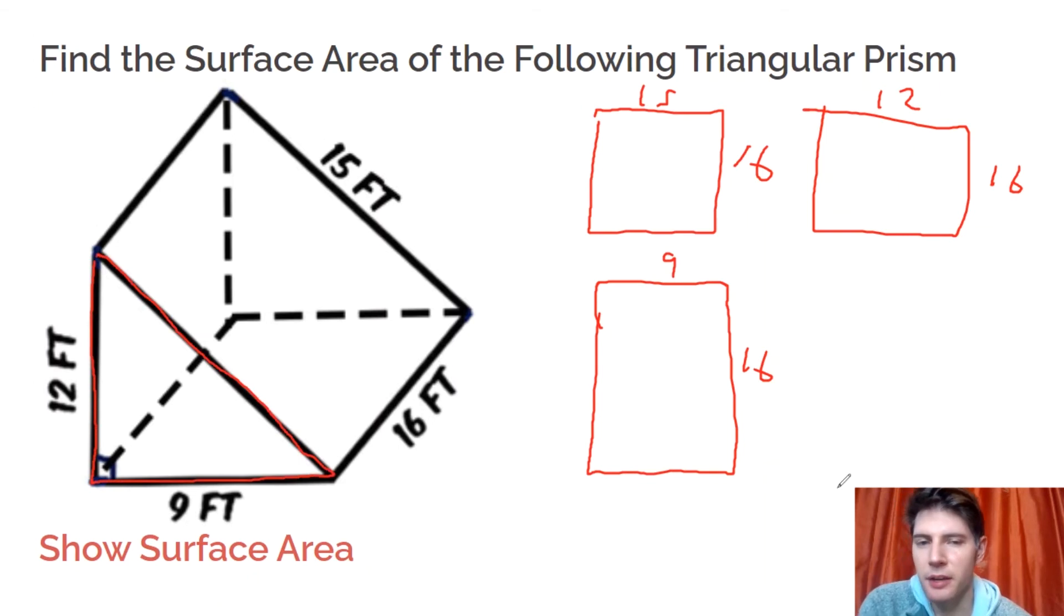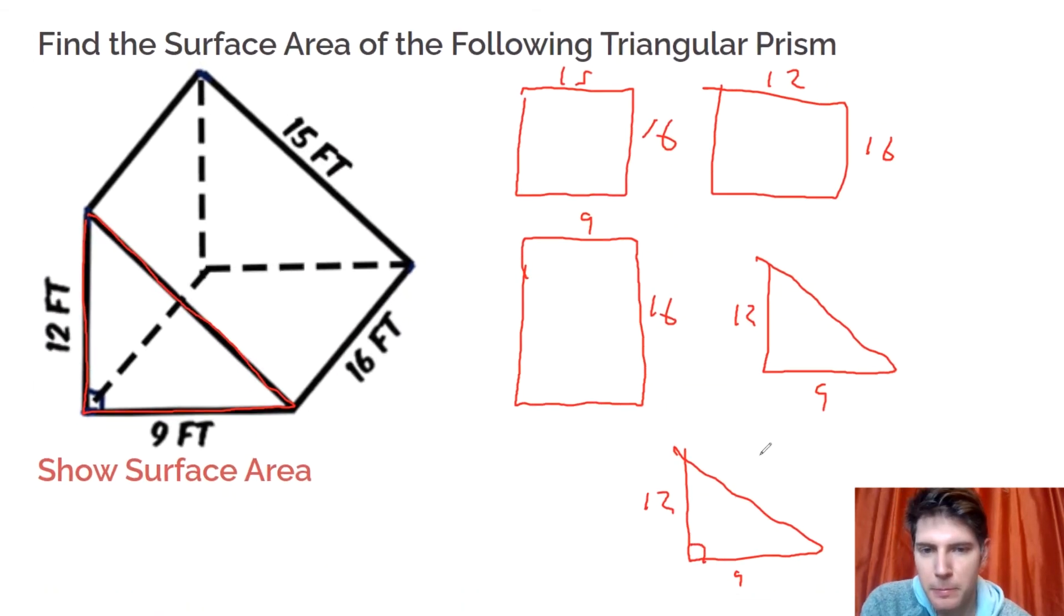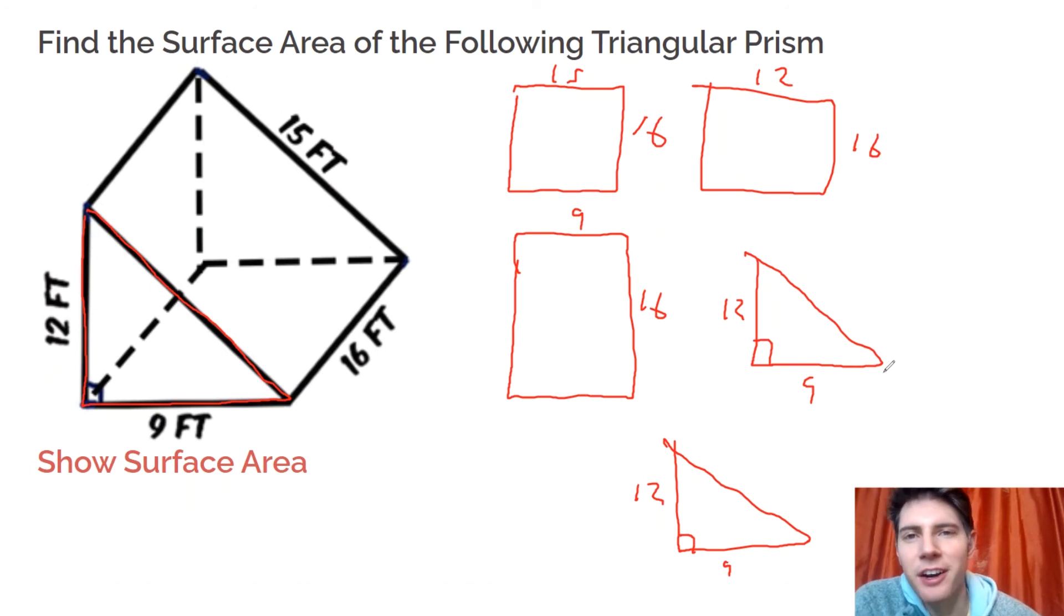And now we want to find the areas of each of these and then add them all up. So for 15 times 16: 240, and then 12 times 16 is 192, 9 times 16 is 144. And then the area of a triangle is one half base times height.